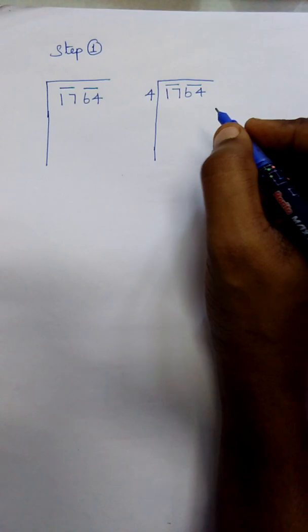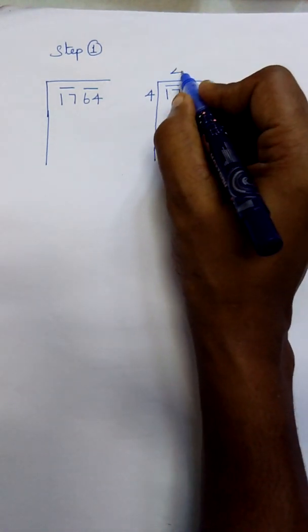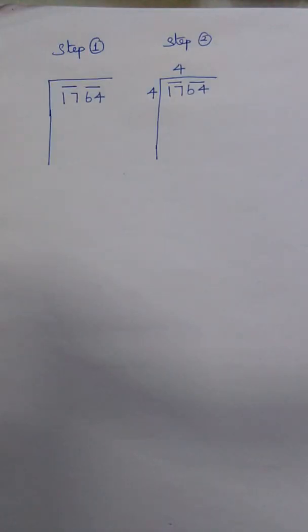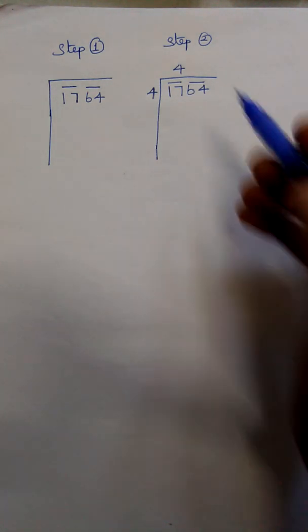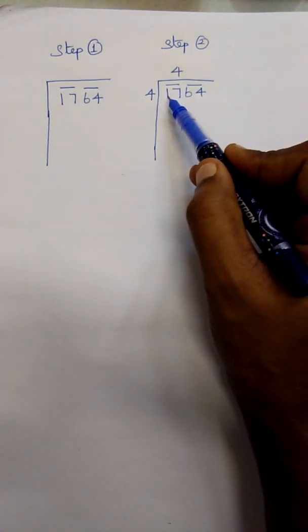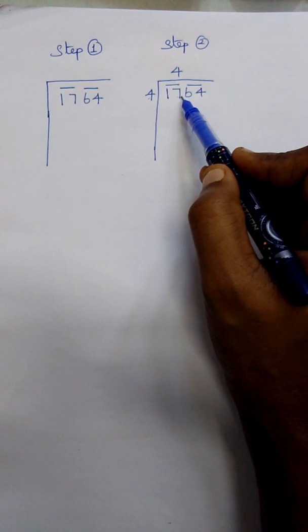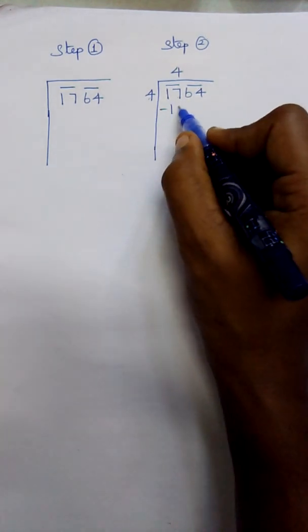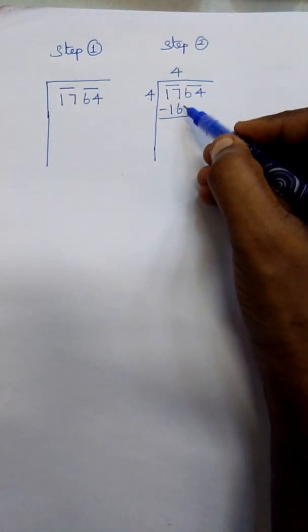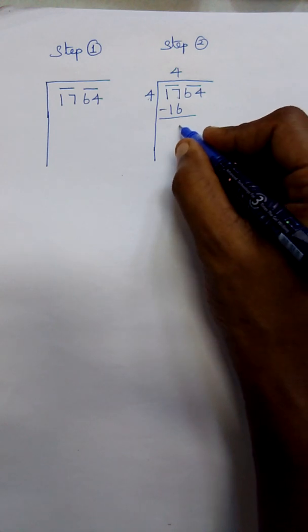See children, four into four is sixteen, so sixteen is just less than the first period 17. Write sixteen and subtract from seventeen. Seventeen minus sixteen is one.